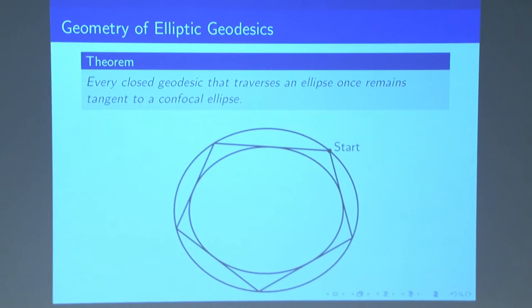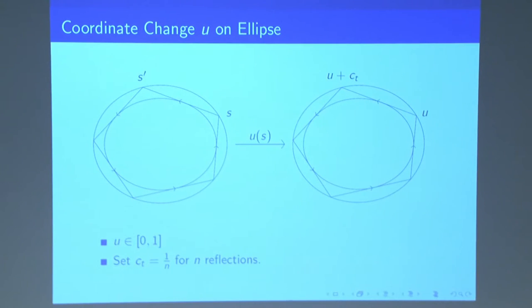In this case, we'll use the eccentricity of our inner ellipse as a characterization parameter. And so with this coordinate change, we can actually calculate exactly, with that theorem, we can actually calculate exactly where the points are on our ellipse in this closed geodesic. So how do we do that?